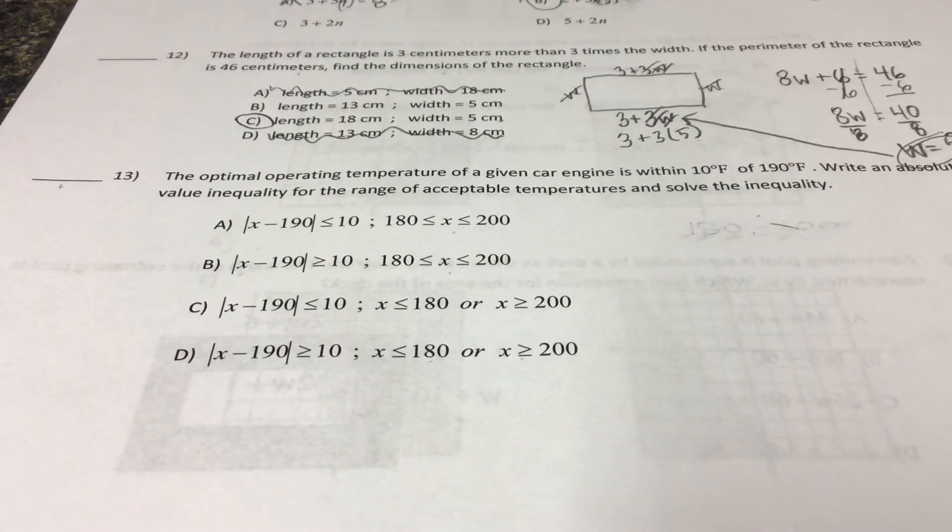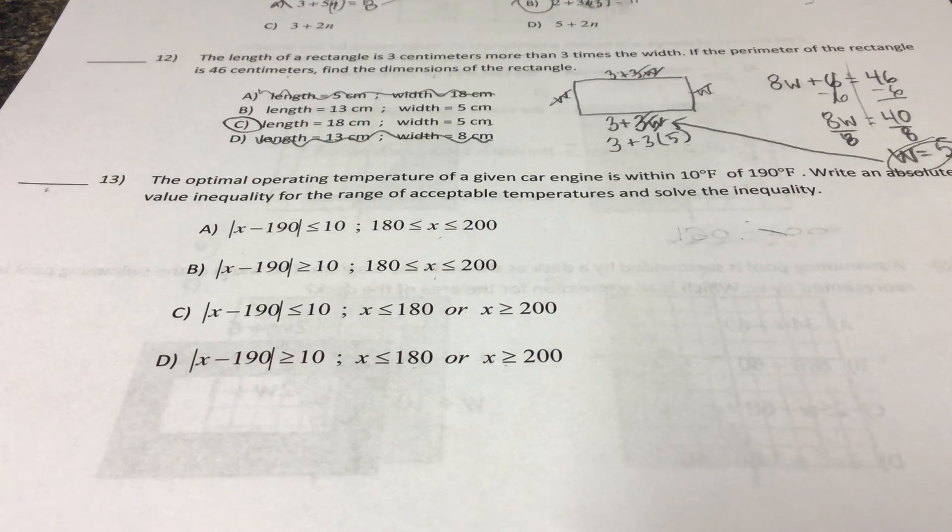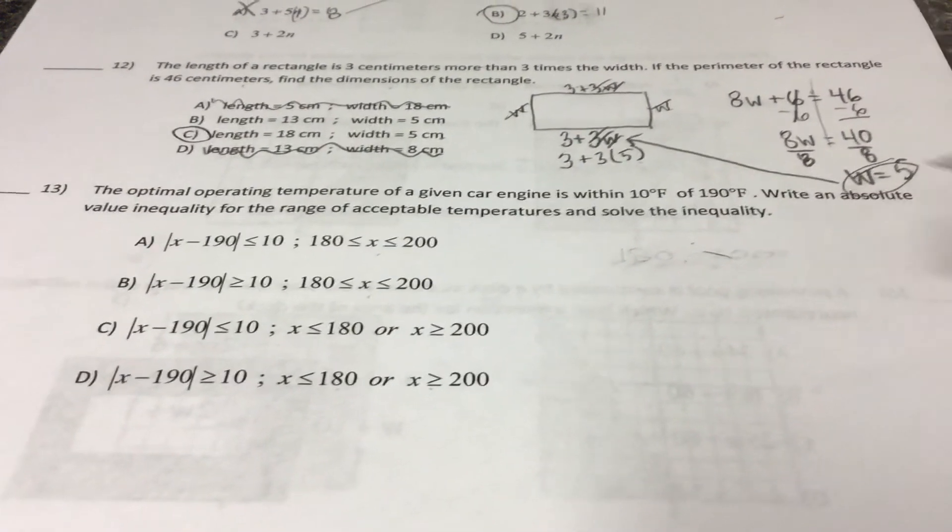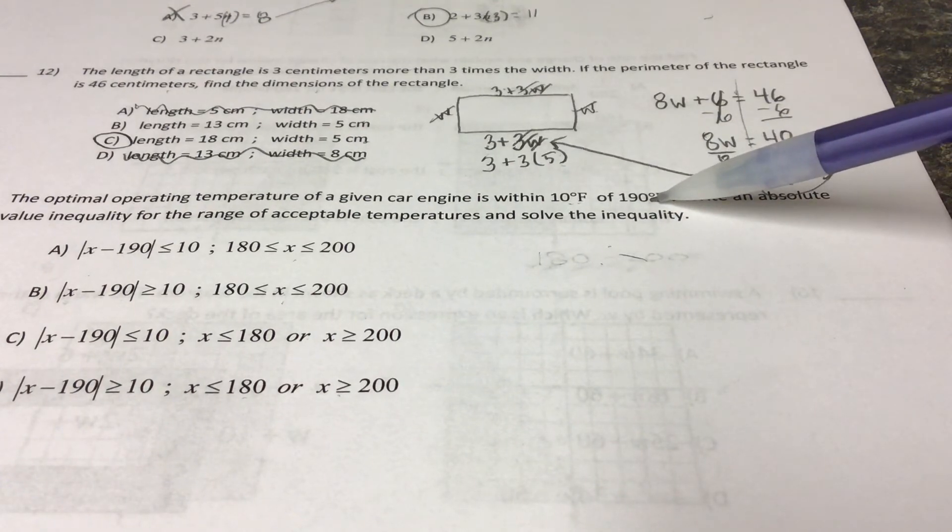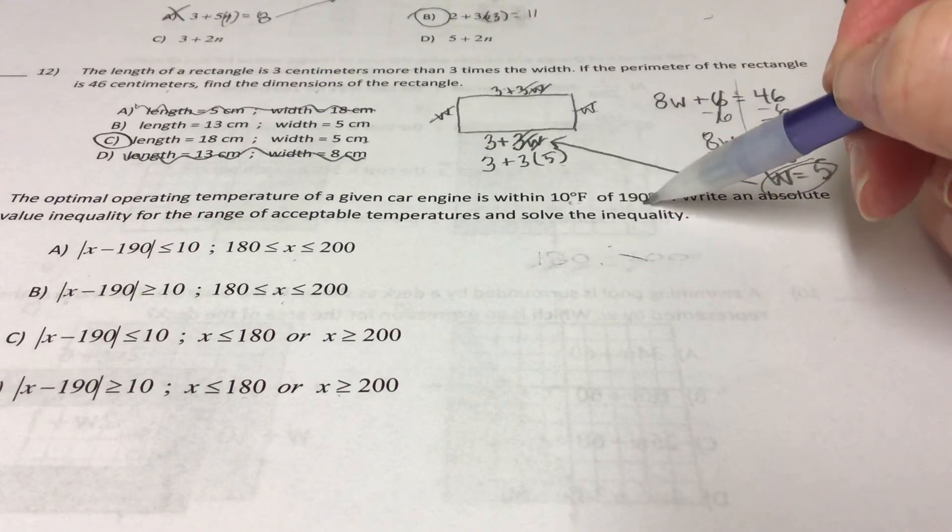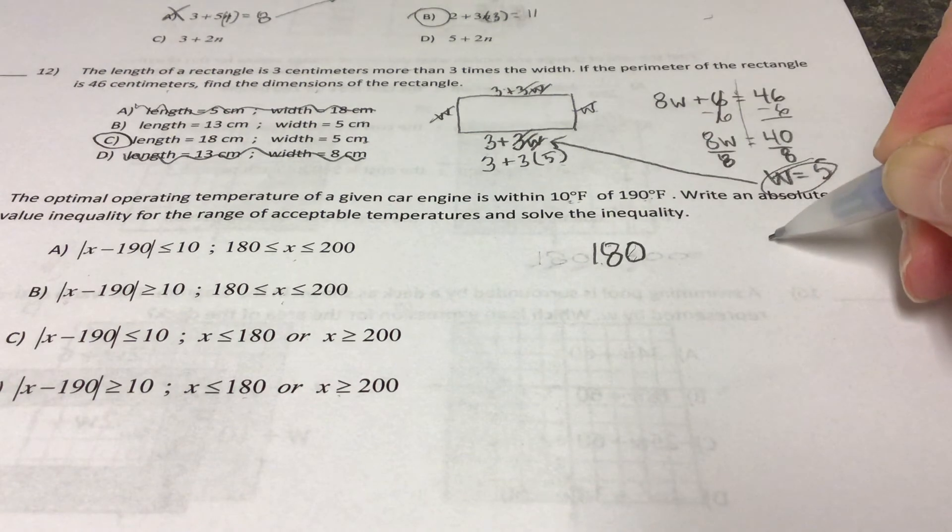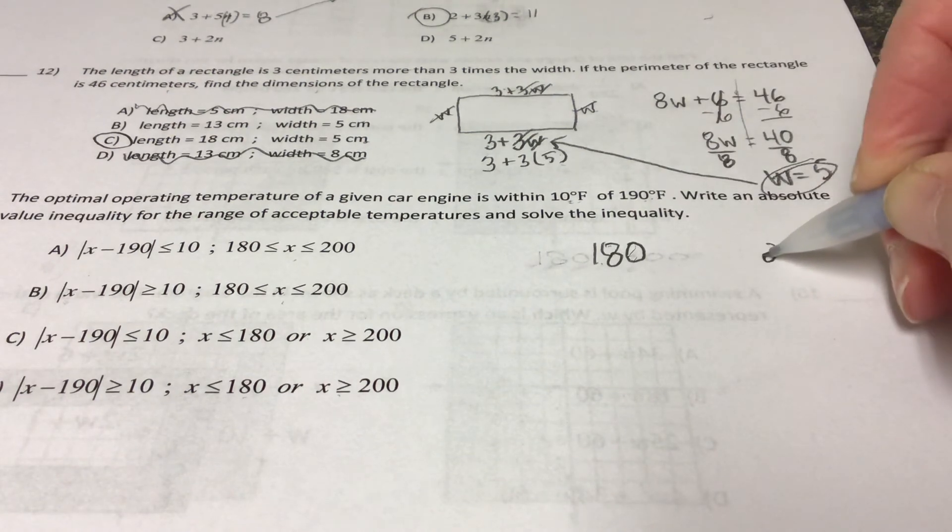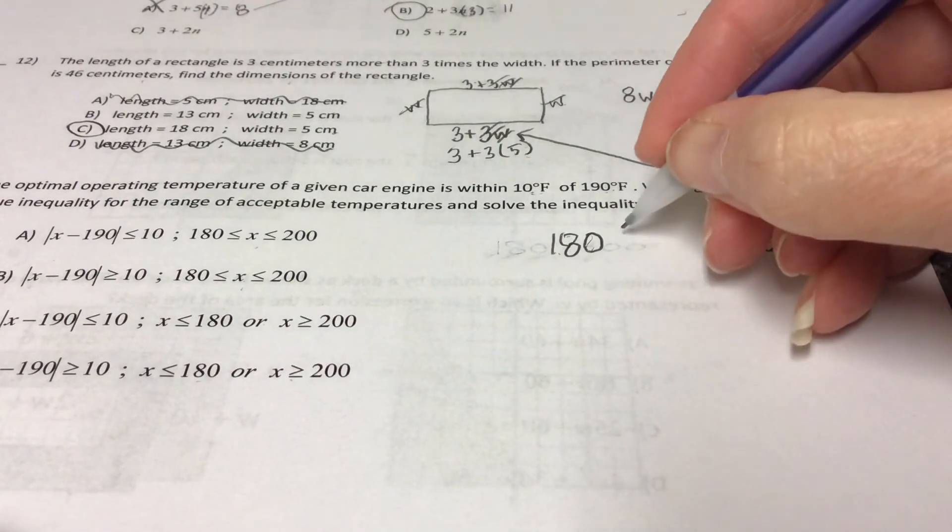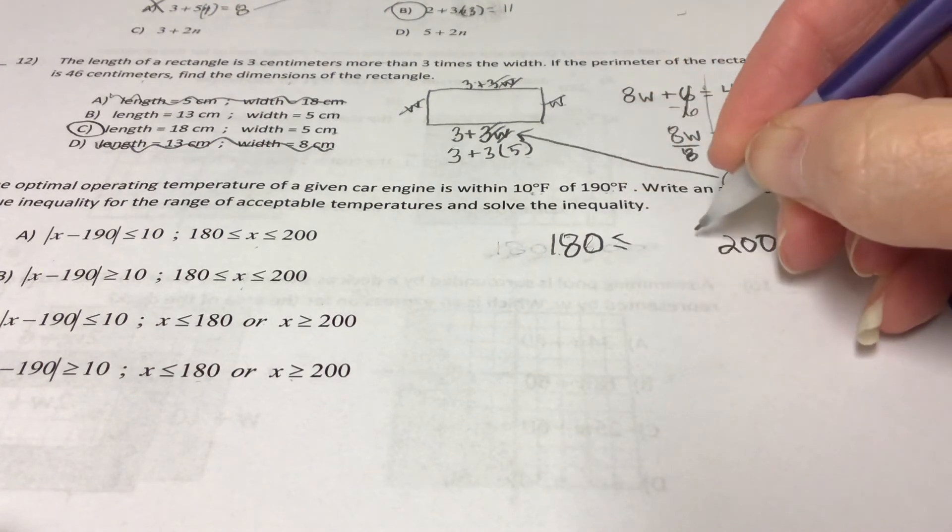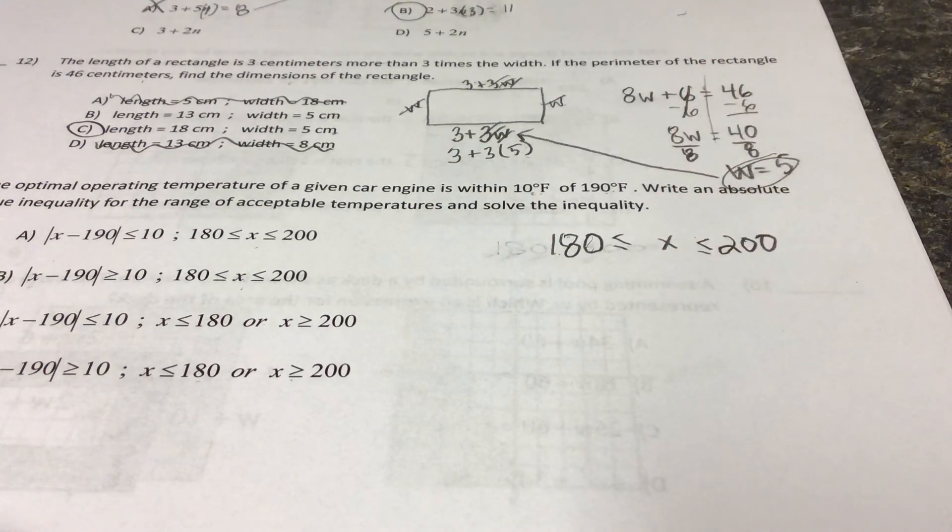Our last question in this video has to deal with the optimal operating temperature of a car. And it says that it's within ten degrees of one hundred and ninety. So it can be ten degrees less than one hundred and ninety, which would be one eighty. And it can be up to two hundred, which would be ten degrees more, right?